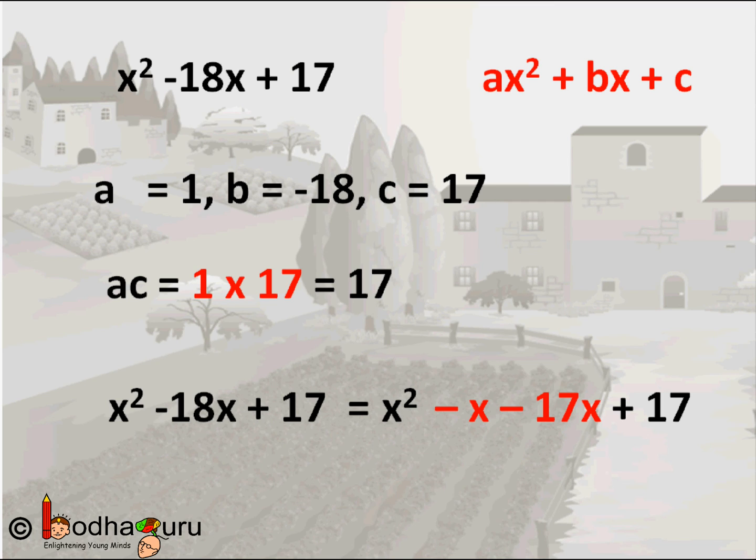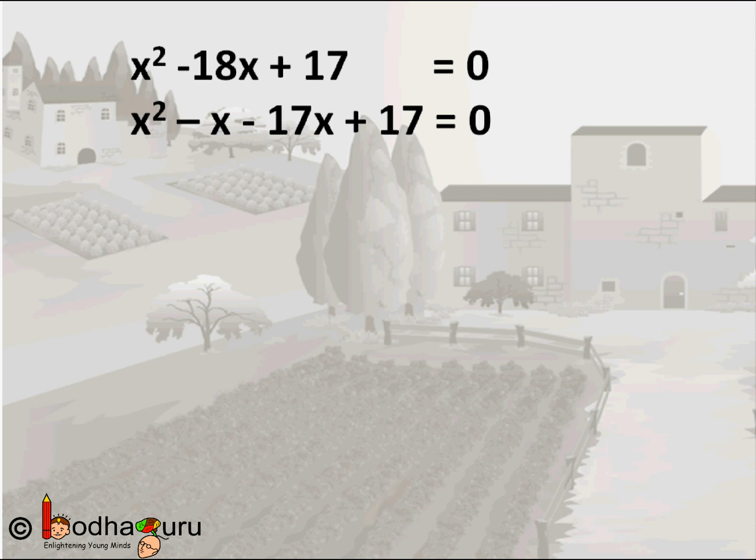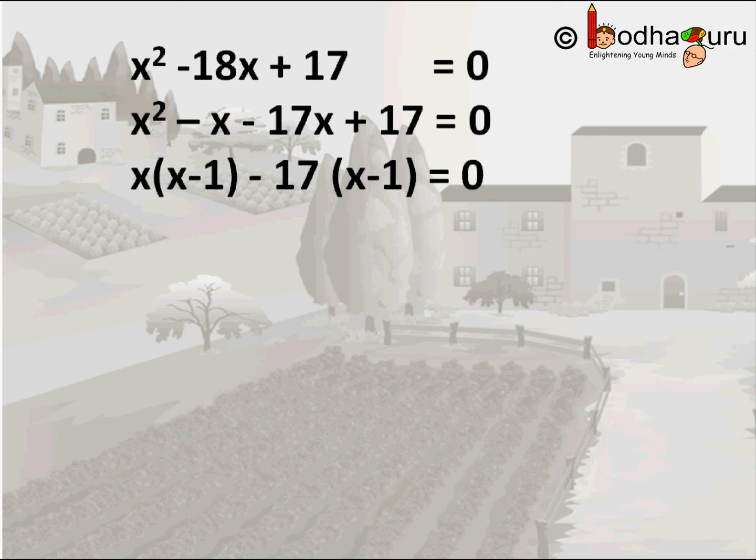Now the common factor of the first two terms is x, so it becomes x(x-1). The common factor of the next two terms is 17. If we bring the minus sign out we have (x-1) remaining in the second two terms. So we have reduced these to two terms: x(x-1) - 17(x-1). Now (x-1) is the common factor of these two terms. We take it out: (x-1)(x-17) = 0.